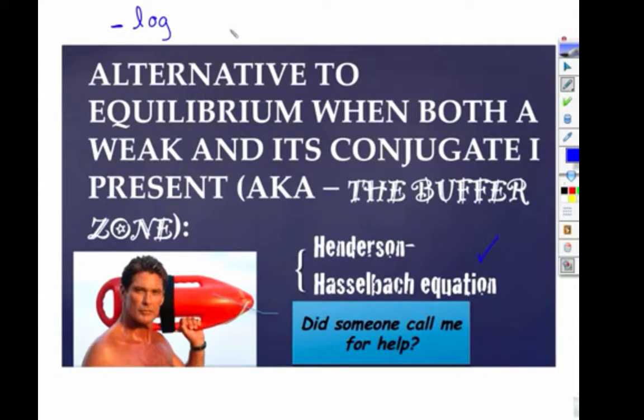And this can be used with only a couple of situations. For one, you have to have a weak and its conjugate present. In other words, we need to be in the buffer zone. The buffer zone has a weak and its conjugate present.